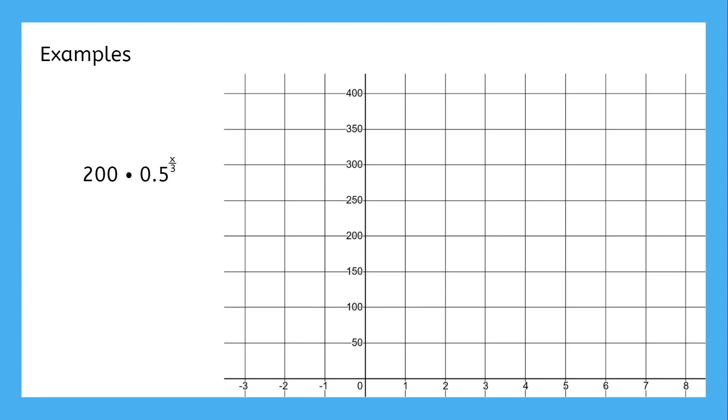So what's different about this exponential decay function? The exponent is being divided by three, meaning it takes three units for the growth factor to apply. Remember, in cases like this, you always want to simplify the power so the growth factor is applied every one unit. In this case, rather than halving the amount every three units, we'll graph it using a growth factor of 0.794 every one unit. So we plot the initial value and then multiply by 0.794 for each unit on the right.